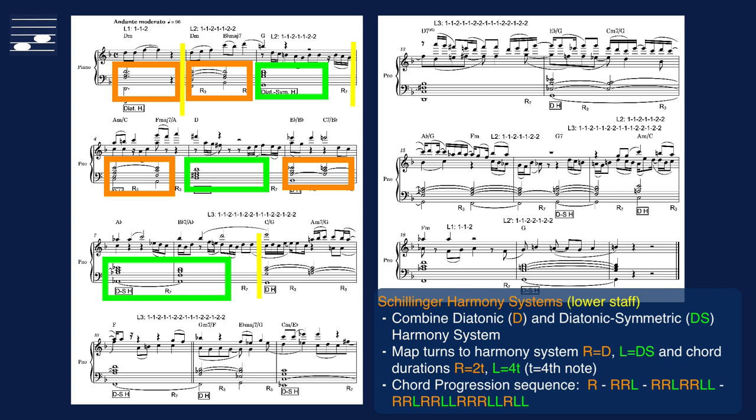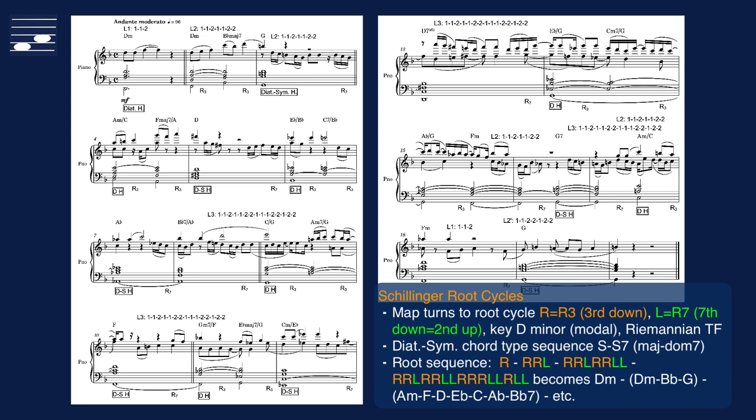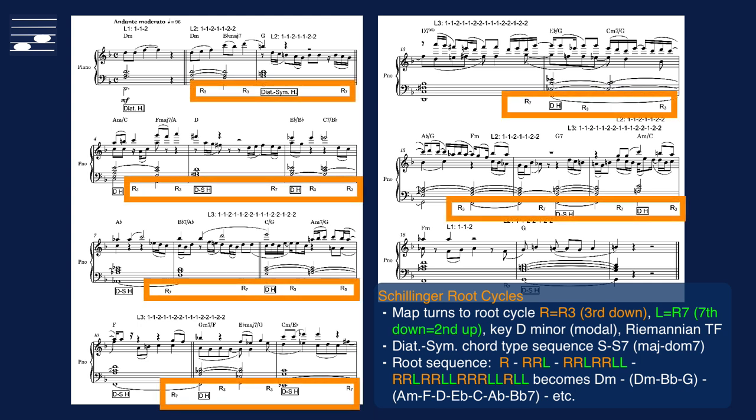So we see half-note diatonic chords interspersed with whole-note duration diatonic-symmetric chords. The complete chord progression moves through dragon curve iteration levels 1 to 4, with the now-familiar increasing phrase length. Also root movement is based on the turn sequence. Using the Schillinger root cycle concept, the mapping is as follows. A right turn leads to a root movement R3, down a diatonic third. While the left turn implies R7, a seventh down, or equivalently, the root moving up by a diatonic step. We use positive root cycles only. The starting key is D minor modal.